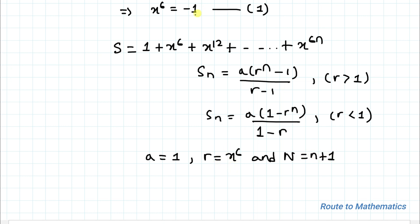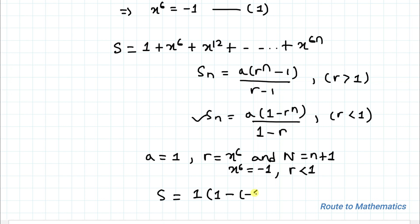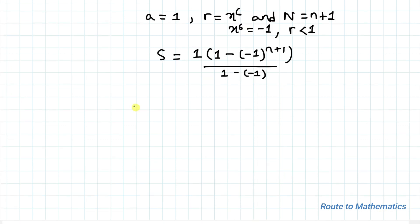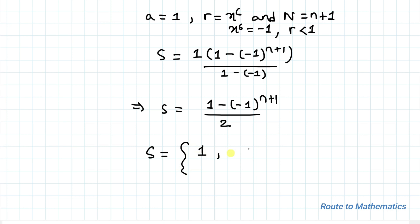From equation 1 we know x to the power 6 equals minus 1, so R is less than 1 and we apply the second formula. S equals 1 multiplied with 1 minus of minus 1 to the power N plus 1, divided by 1 minus of minus 1. This simplifies to S equals 1 minus of minus 1 to the power N plus 1, divided by 2. Therefore S equals 1 when N is odd, and 0 when N is even. This is our answer.